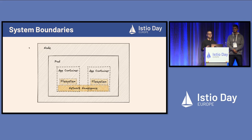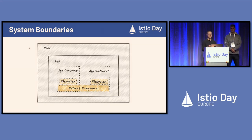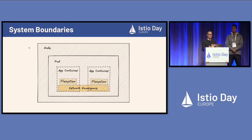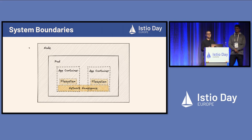A pod is generally seen as an isolated unit, but containers in Linux and Kubernetes don't provide a super strong security boundary — not as strong as a node boundary. Within a pod, multiple containers have an even weaker boundary. In a typical Istio pod you have a sidecar and an application container that share a network namespace, meaning they're on the same network and can access each other's localhost. File systems and process namespaces can also be merged. So there's a decreasing amount of boundary as you go deeper into the system.